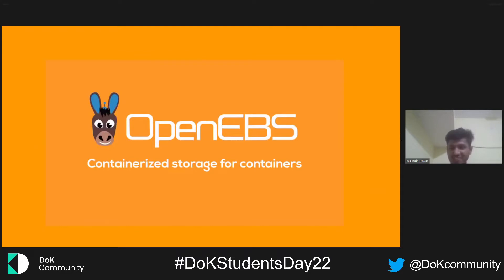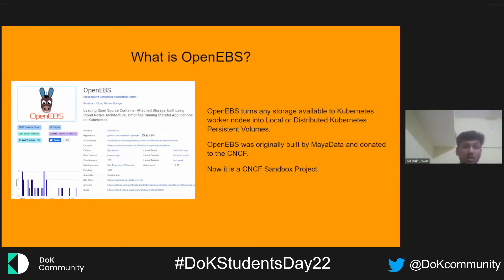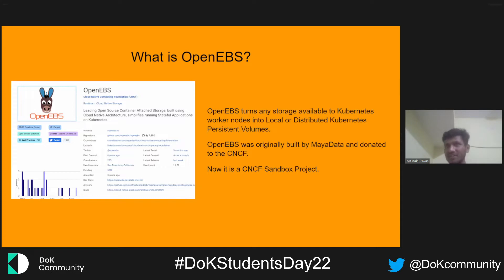Let's dive right into it. To begin with, what is OpenEBS? OpenEBS basically turns any storage available to Kubernetes nodes into a local or distributed Kubernetes persistent volume. That's the basic one-line definition of what OpenEBS is. We'll go into much more detail about it so it becomes much more clarified, and we'll look into what an awesome tool it is.